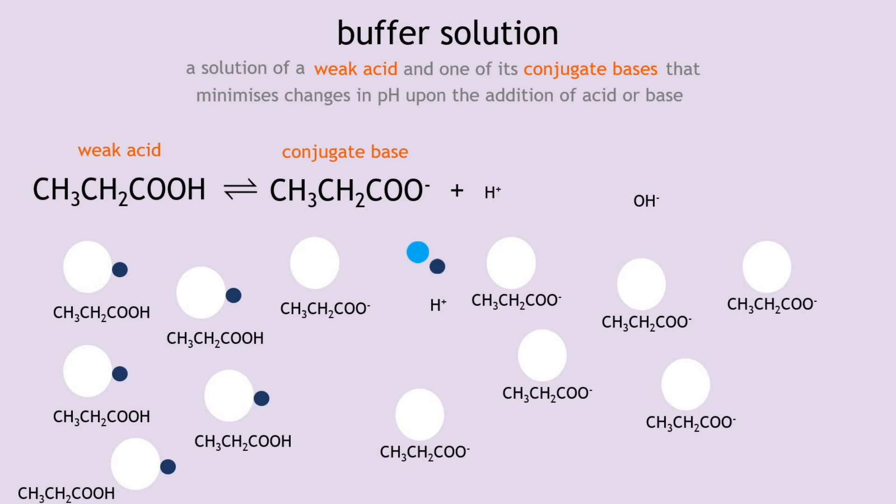The hydroxide ions react with hydrogen ions to form water. Water has a pH of 7 — it is neutral — so it does not affect the pH of the solution at all. The addition of hydroxide ions has had no effect; they have been mopped up by the hydrogen ions, and this time the reservoir was actually the weak acid. This works well for a weak base, but if we add stronger or more concentrated bases with more hydroxide ions, this mechanism may not be sufficient.